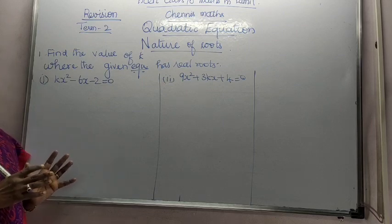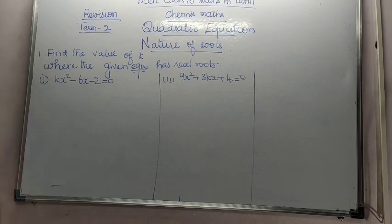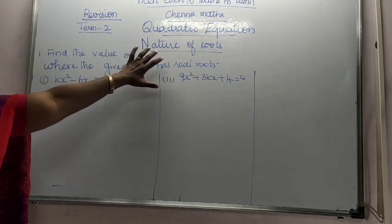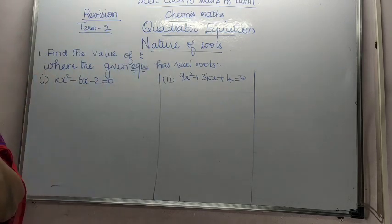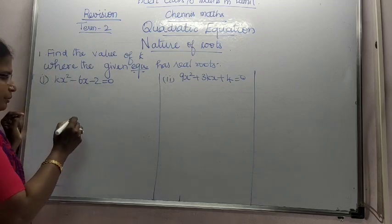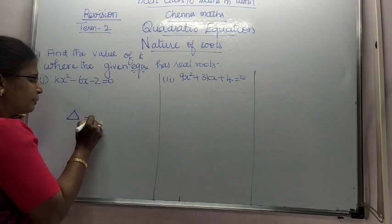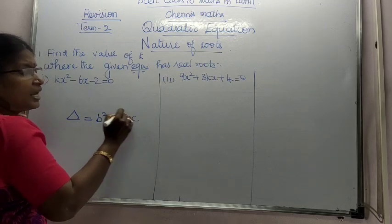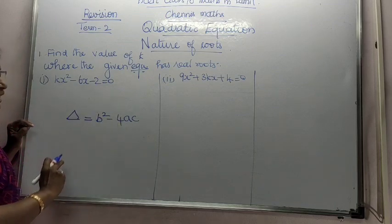See, if you have a quadratic equation, we are going to see the nature of the roots. Nature of the roots is nothing but what type of roots it may be. If you have discriminant, if you have del is equal to b squared minus 4ac.